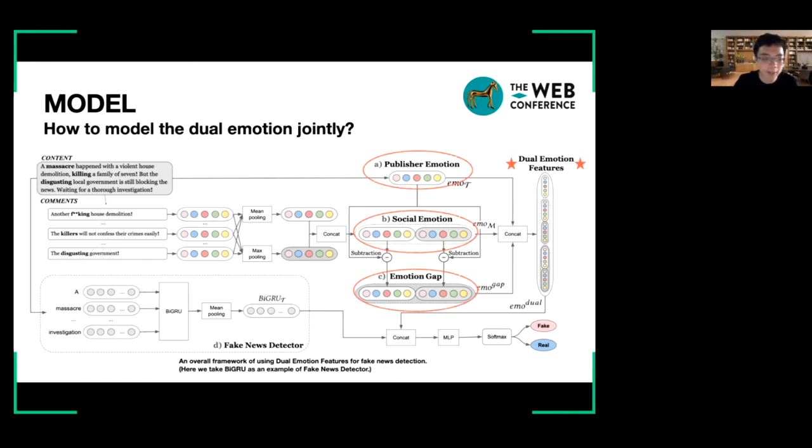For emotion resonances, the values in the emotion gap vector are nearly zero. By now, we have got the three components of dual emotion features. Finally, we can concatenate them with the output features of fake news detectors for the final prediction of news veracity.